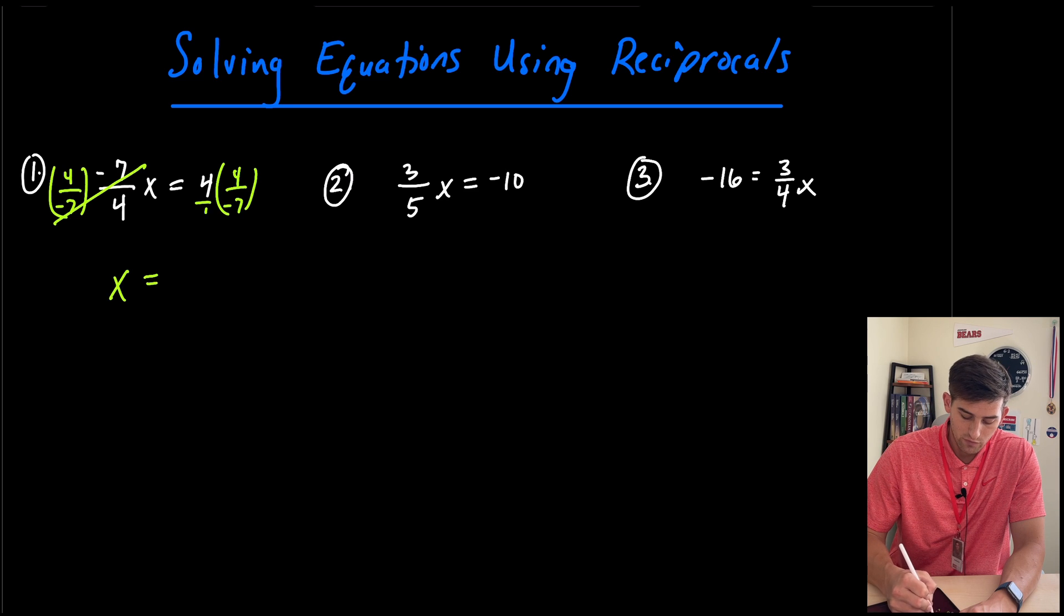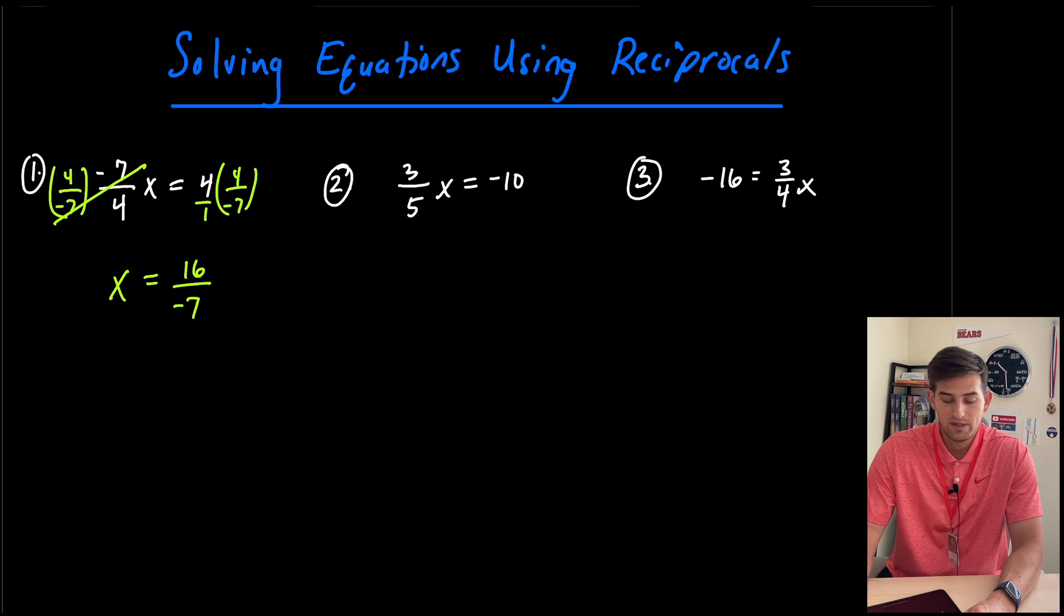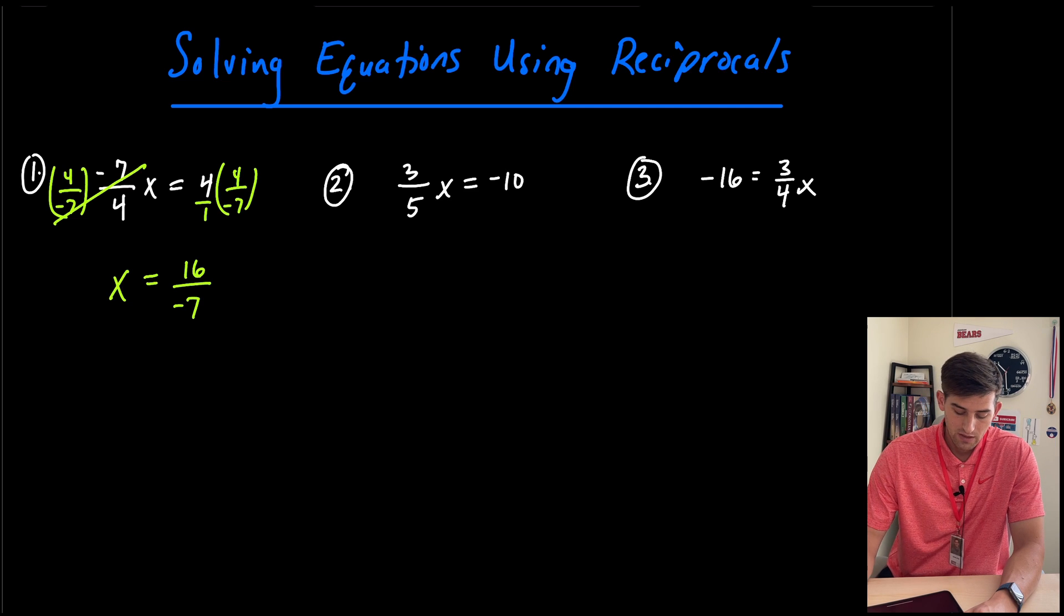So now I have two fractions, four over one times four over negative seven. So four times four would be 16, and my denominator would be negative seven.